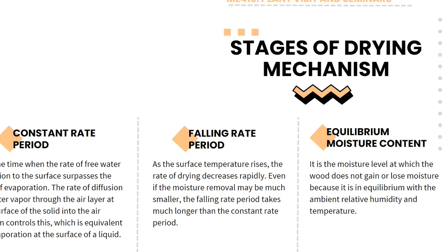Here are the definitions of the three stages of the drying mechanism. The constant rate period is the time when the rate of free water diffusion to the surface surpasses the rate of evaporation, and the rate of diffusion of water vapor through the air layer at the surface of the solid into the air stream controls this — equivalent to evaporation at the surface of the liquid. The equilibrium moisture content is the moisture level at which the wood does not gain or lose moisture, as it is in equilibrium with the ambient relative humidity and temperature. A graph will be used to better explain each stage.